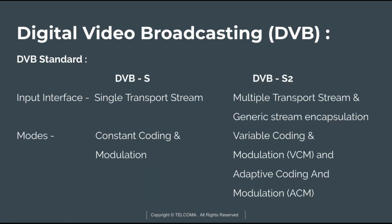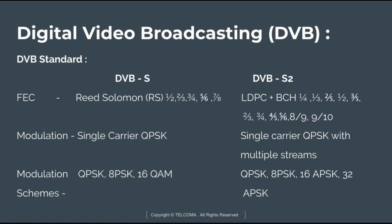The differences between DVB-S and DVB-S2: first, the input interface. In DVB-S the input interface is a single transport stream, whereas in DVB-S2 the input interface supports multiple transport streams and Generic Stream Encapsulation. In DVB-S the mode used is Constant Coding and Modulation, whereas in DVB-S2 there are two modes: Variable Coding and Modulation (VCM) and Adaptive Coding and Modulation (ACM).